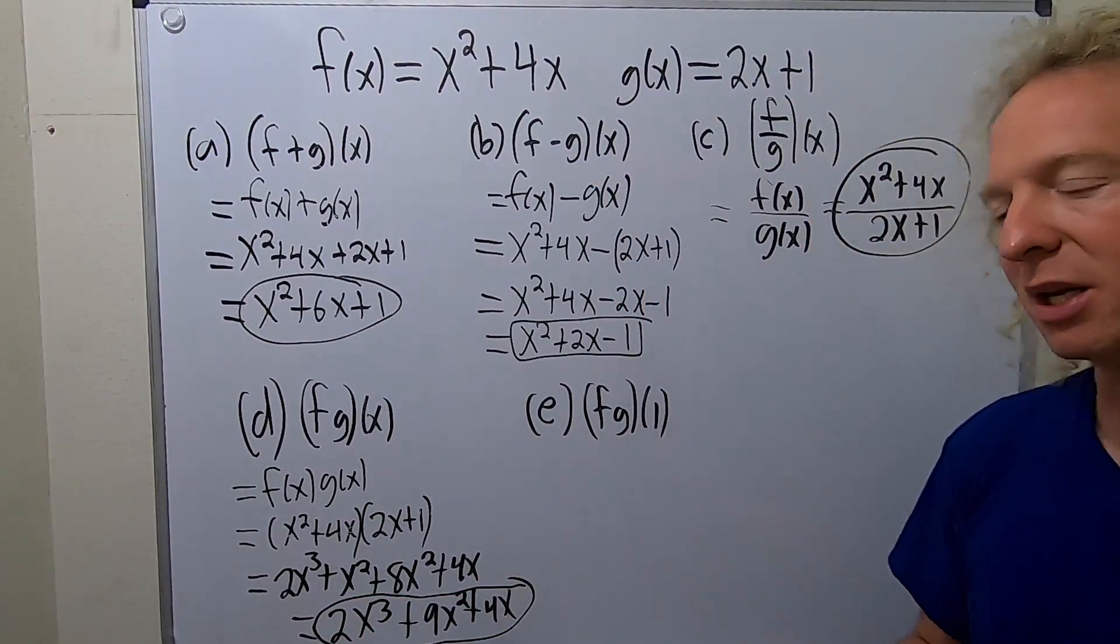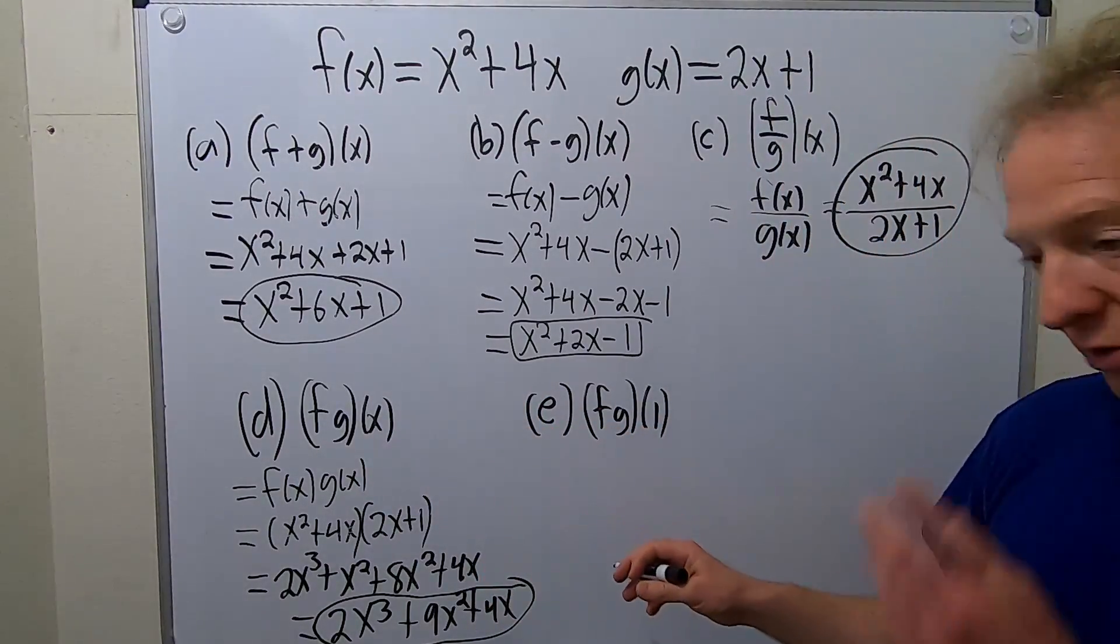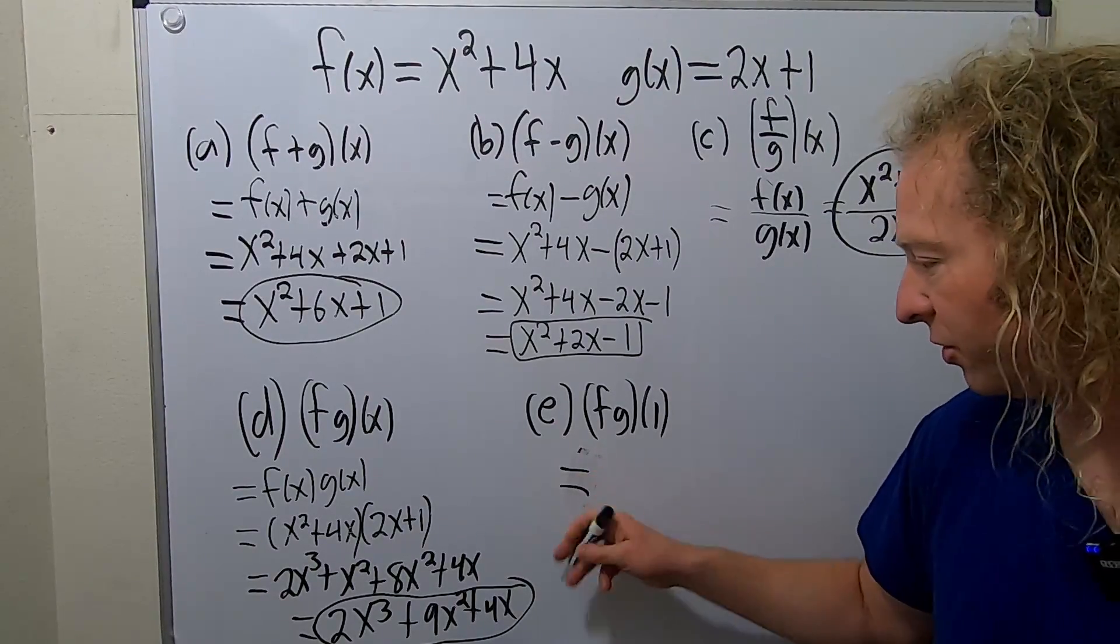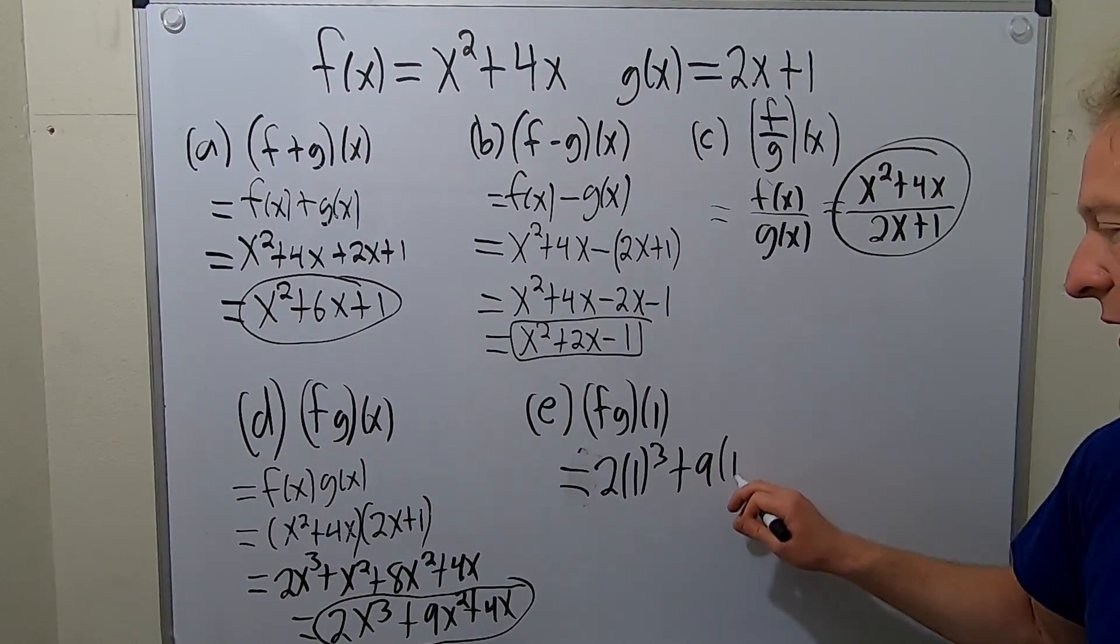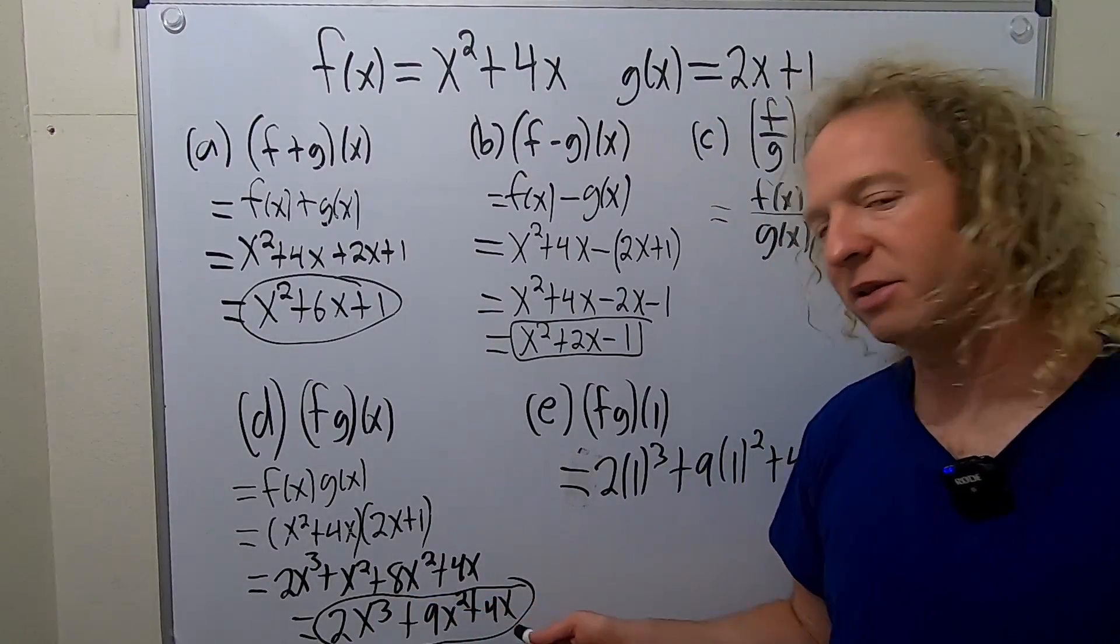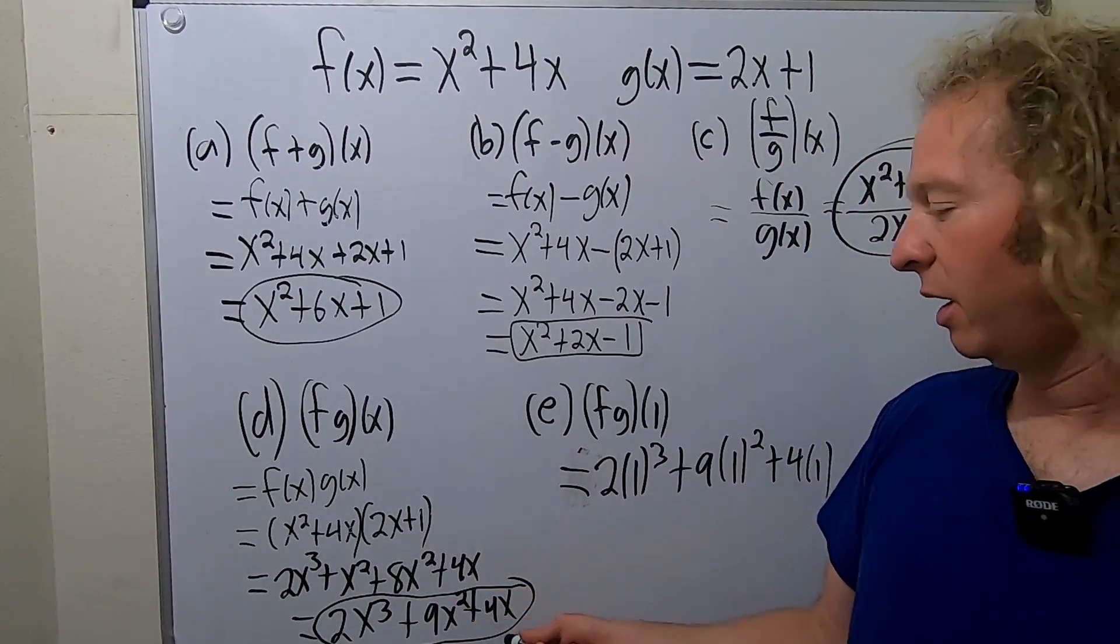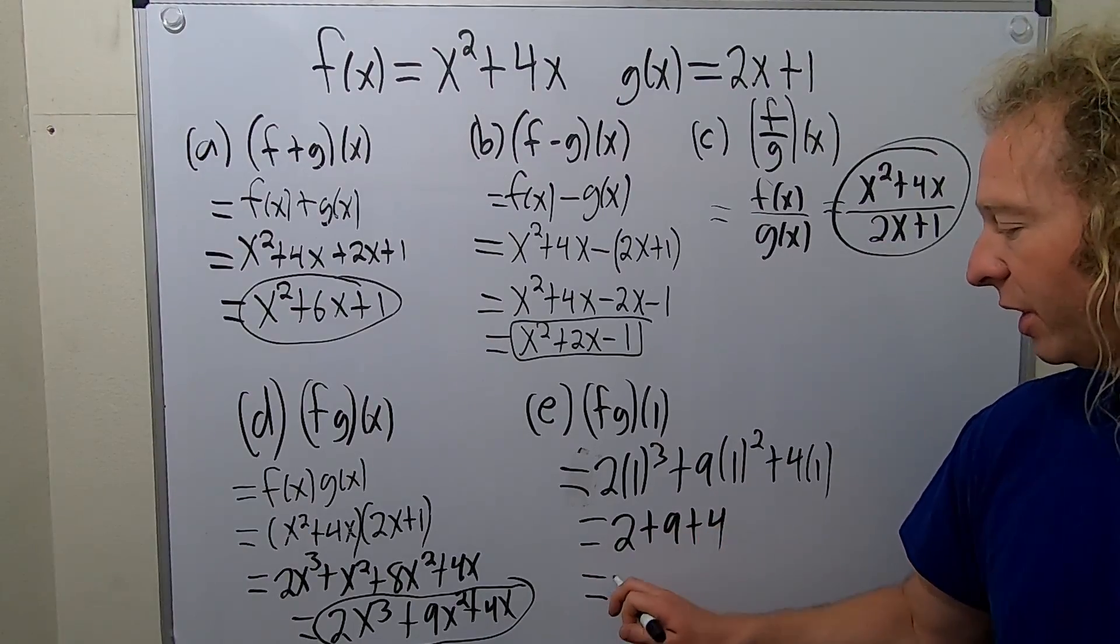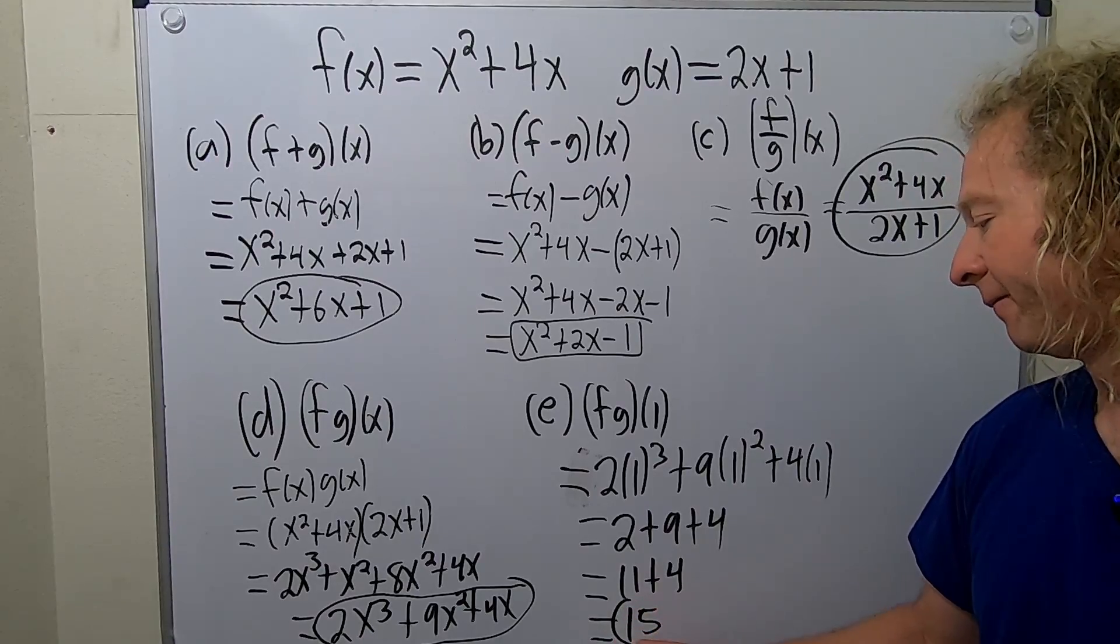The last one is really easy. And I kind of threw it in because a lot of times you see this. Basically, you just plug in 1 to the answer you got here. So this will be fg of 1. This is equal to 2 times 1 cubed plus 9 times 1 squared plus 4 times 1. Basically, replacing all of the x's with 1's. So you put a 1 here. You put a 1 here. You put a 1 here. And then so you just get 2 plus 9 plus 4. So you get 11 plus 4. So you get the number 15. And that's it.